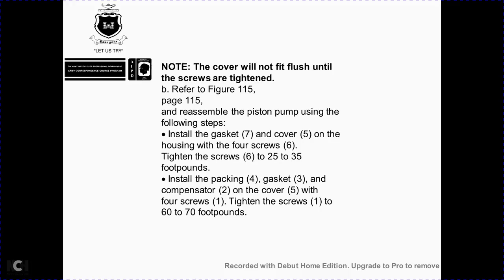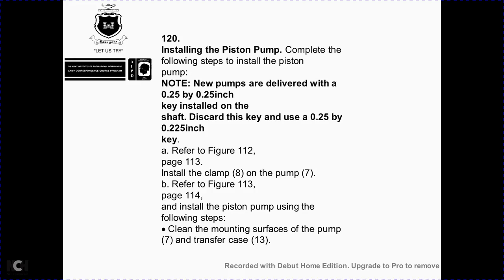Install gasket 7 and cover 5 on housing 8 with four screws 6, and tighten screws 6 to 25–35 foot-pounds. Install packing 4, gasket 3, compensator 2, and cover 5 with four screws 1; tighten screws 1 to 60–70 foot-pounds torque.